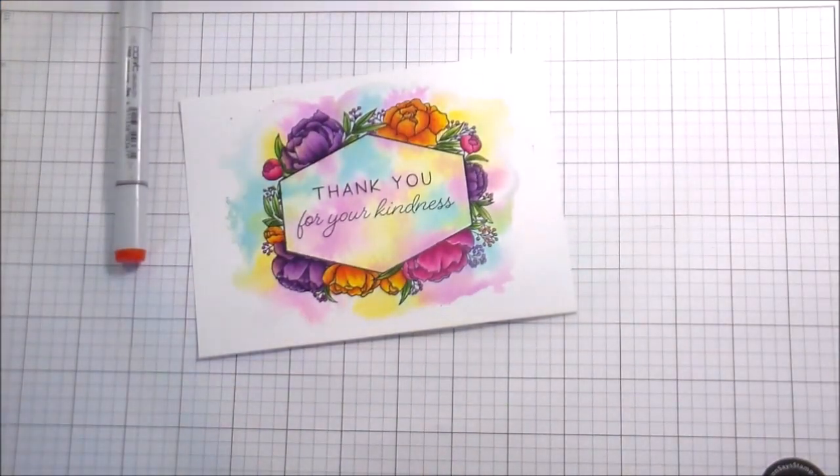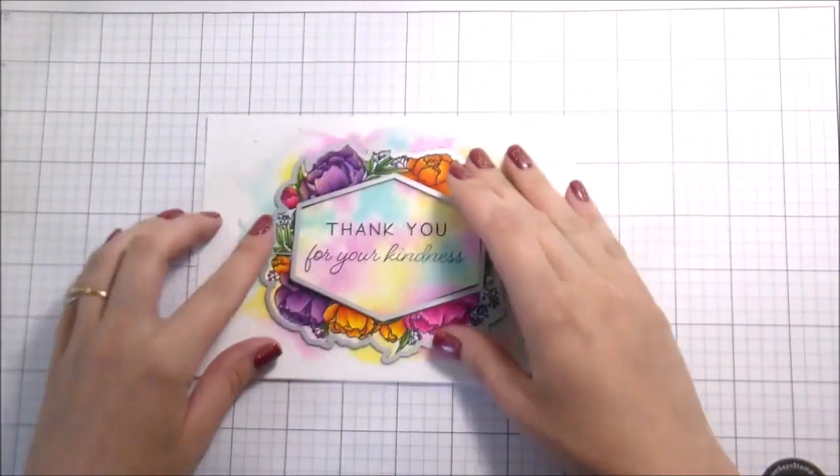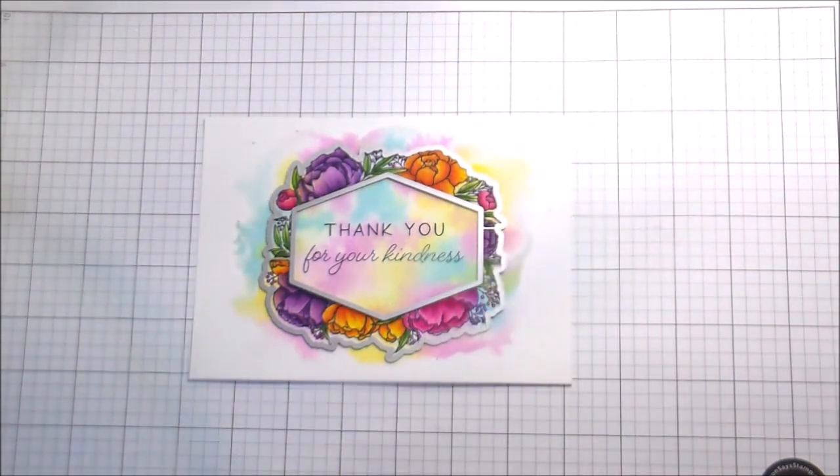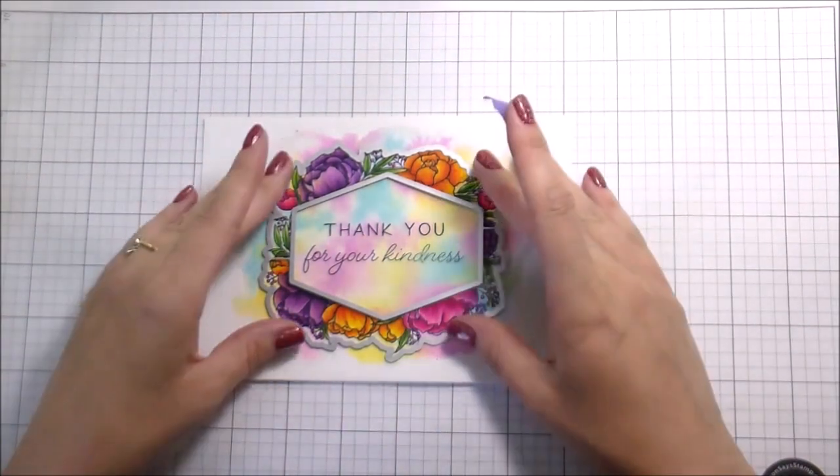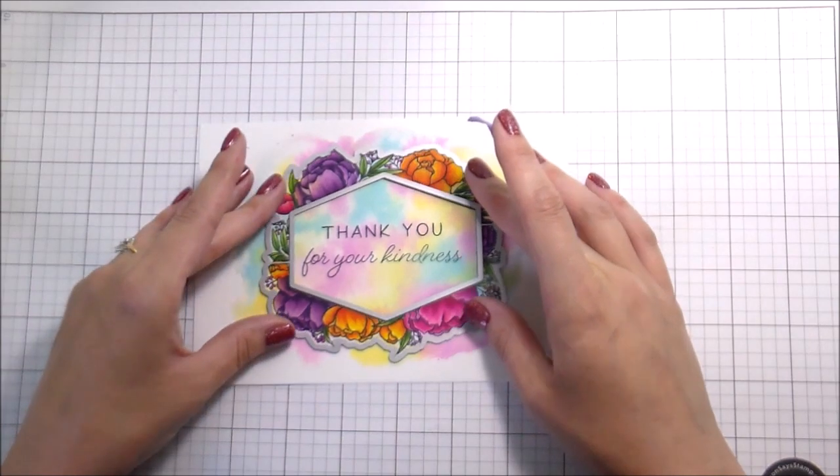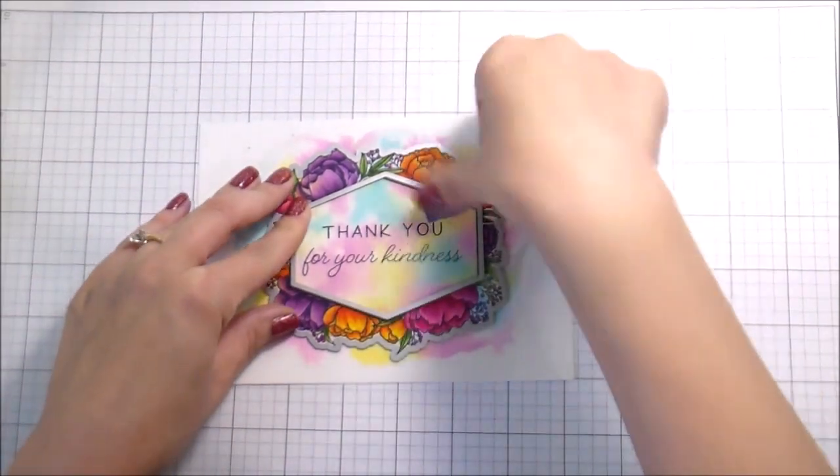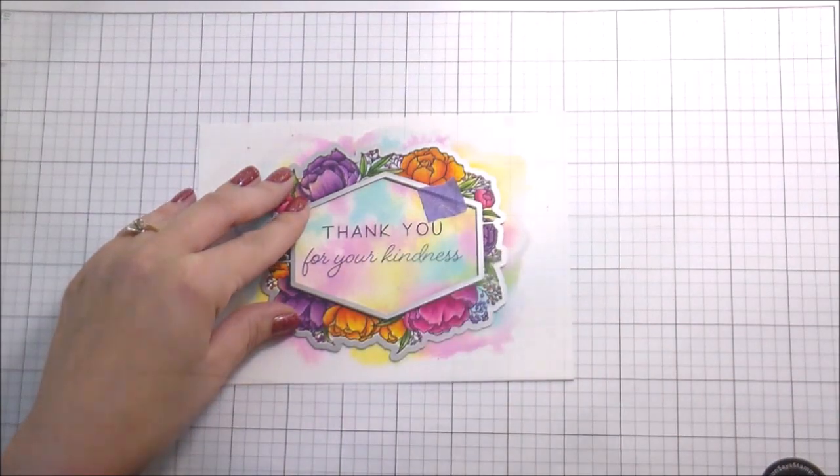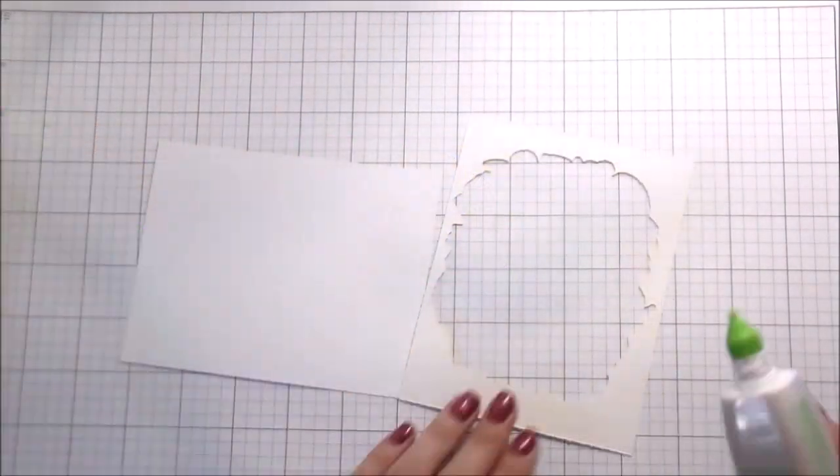So now that this is stamped I am going to put the die in place. Now the die comes with the geometric shape attached to the flowers. You can cut them apart, I chose not to. I chose to just leave them together, line them up accordingly and then tape them in place.